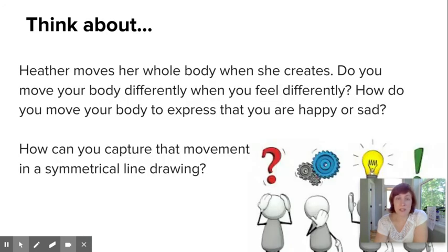So for this art project, you're going to think about how her whole body was being used and how your body moves differently when you feel different things. You can think about the basic emotions of happy and sad, and you can create your own symmetrical line drawing.